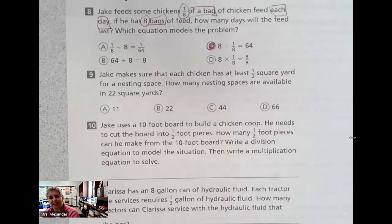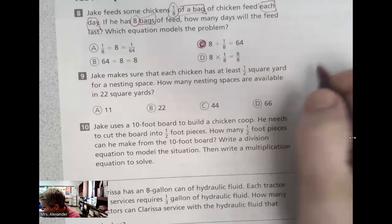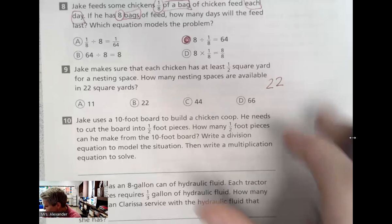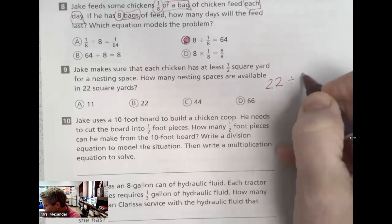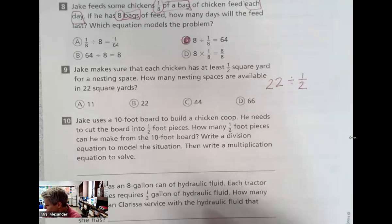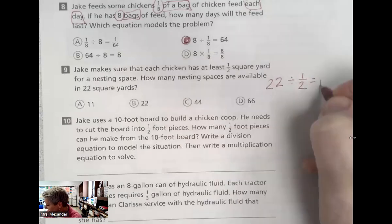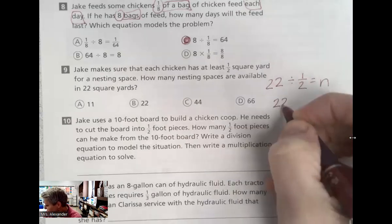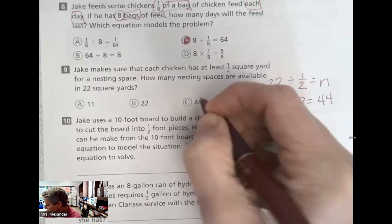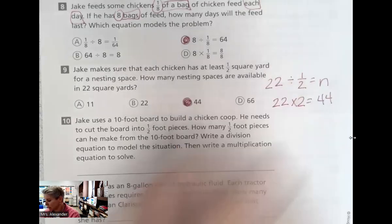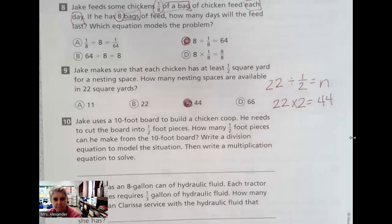Jake makes sure that each chicken has at least one-half square yard for a nesting space. How many nesting spaces are available in 22 square yards? So if we have 22 square yards and he wants to divide that into half square yards, we would do keep, change, flip, how many nesting spaces? 22 times 2 would equal 44 nesting spaces. Check for reasonableness. Does that make sense? And it does. Good.